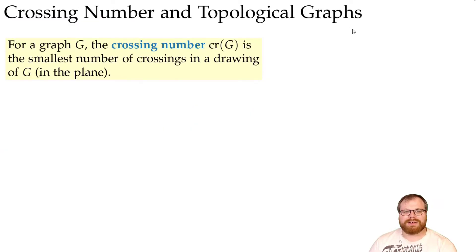For any graph, the crossing number is defined as the smallest number of crossings that we have in any drawing of the graph. We always talk about drawings in the plane now, so I will omit it in the future. So however you draw this graph, there is no way to draw it with fewer than cr of G crossings.